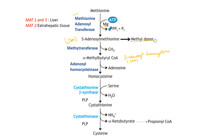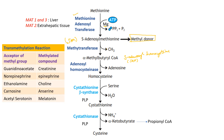S-adenosyl methionine forms S-adenosyl homocysteine or SAH by donating its methyl group. S-adenosyl methionine is the methyl donor of the body. This occurs with the help of transmethylation reactions throughout the body, where the methyl group is accepted by an acceptor to form a methylated compound. For example, norepinephrine forms epinephrine, ethanolamine forms choline, carnosine which is a beta-alanine dipeptide forms anserine, and acetyl serotonin forms melatonin, which is important in the serotonin pathway of tryptophan.